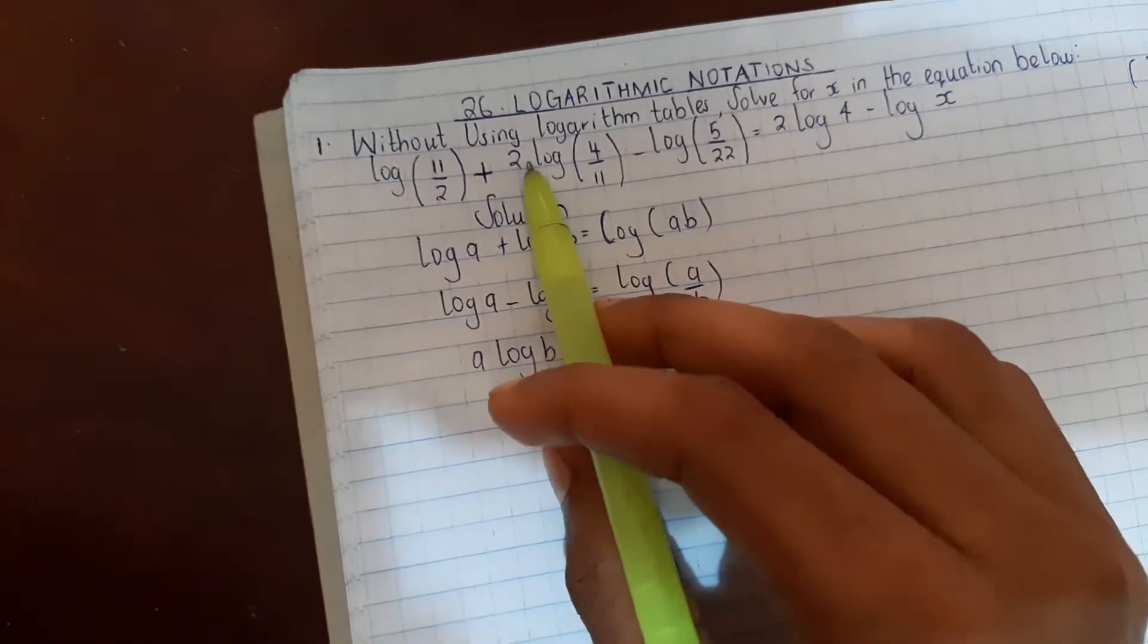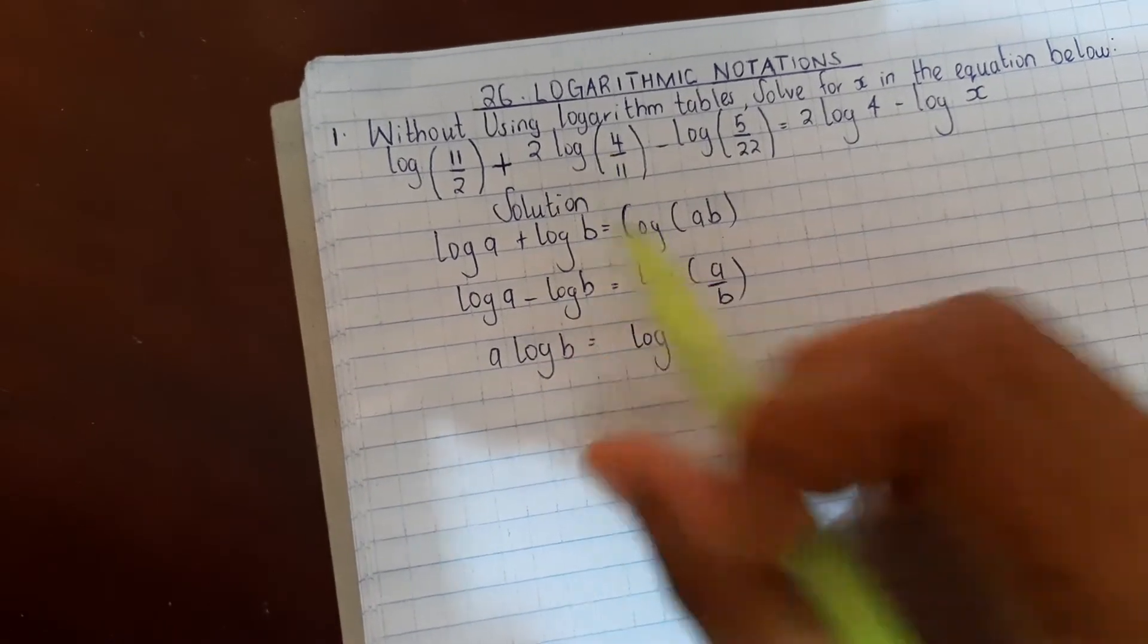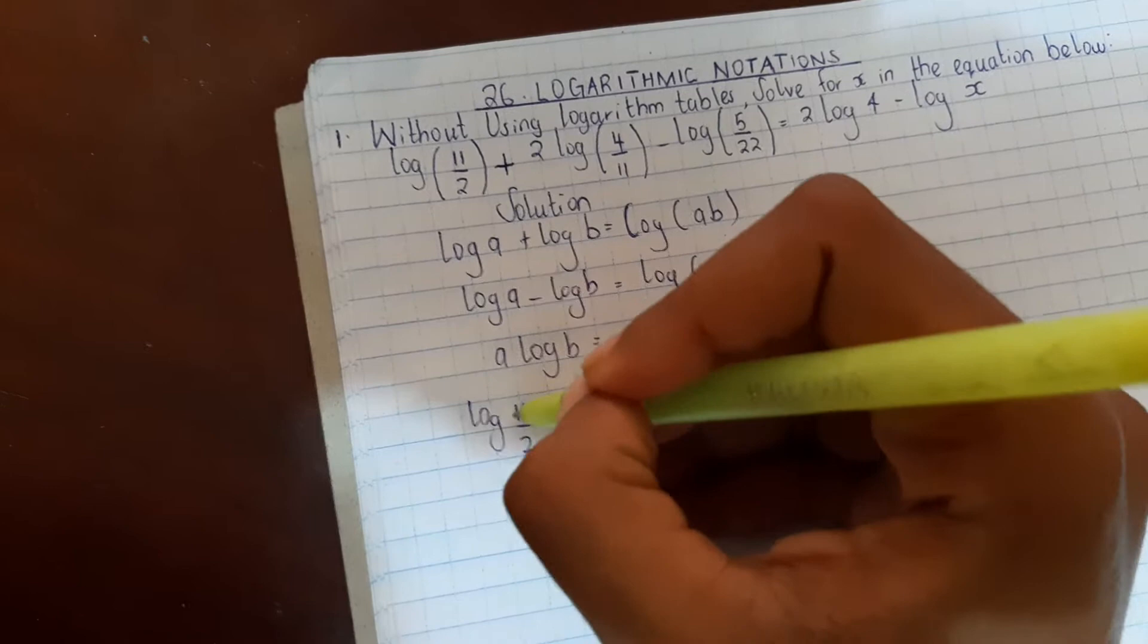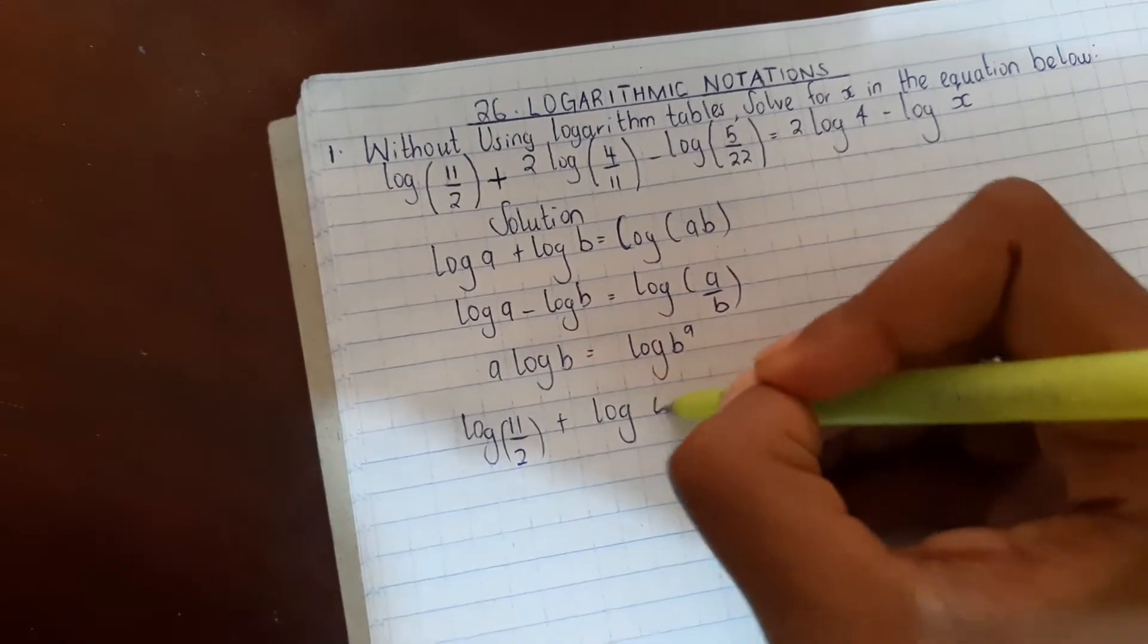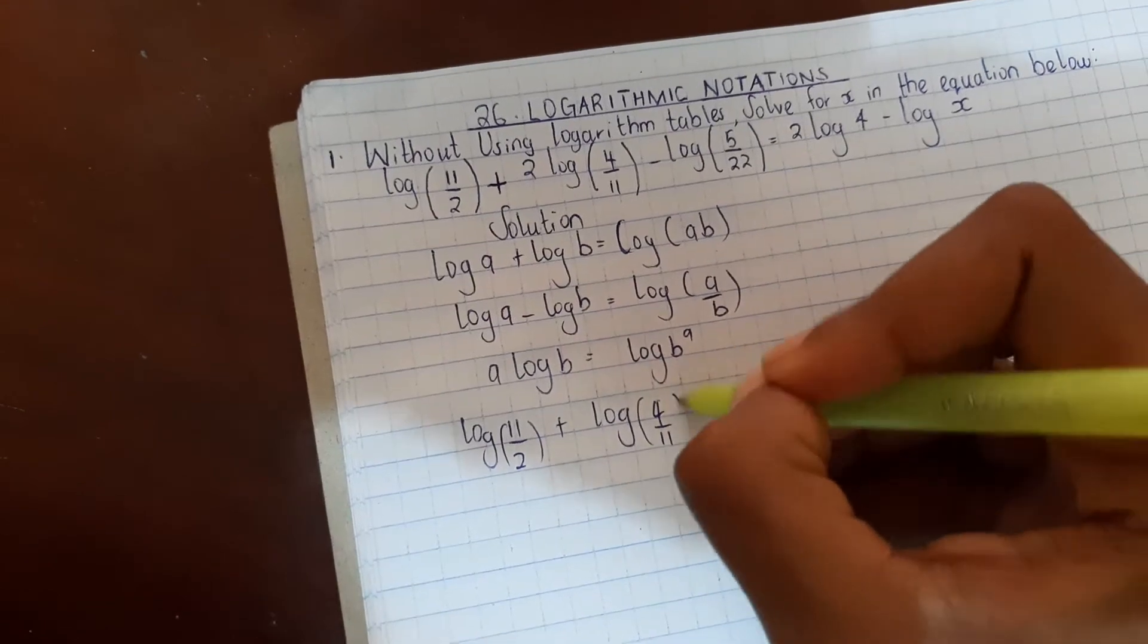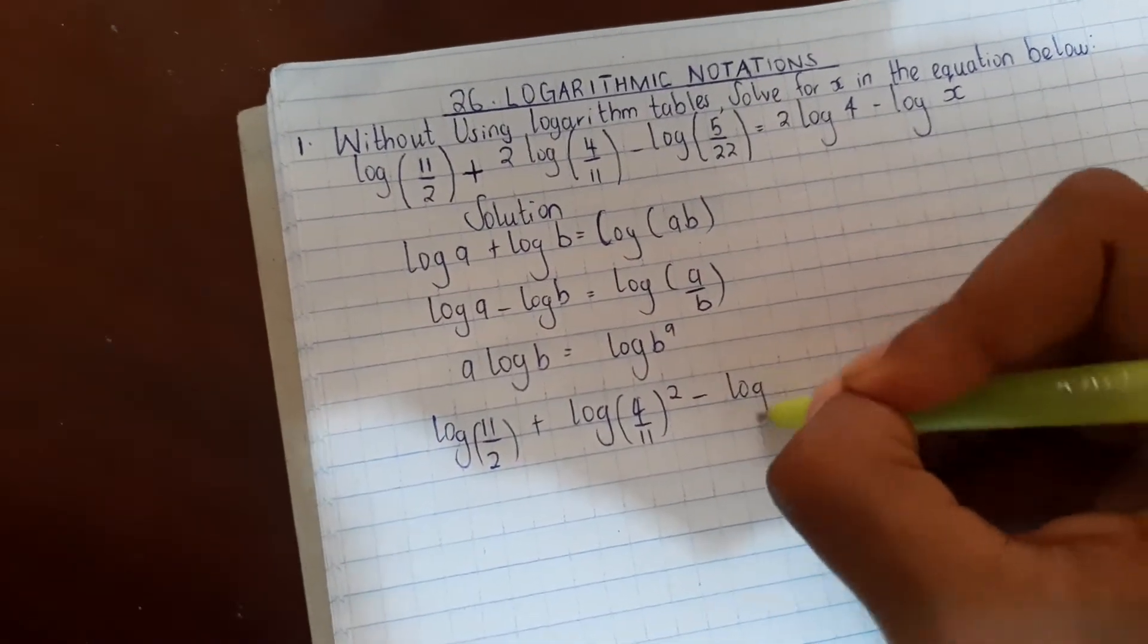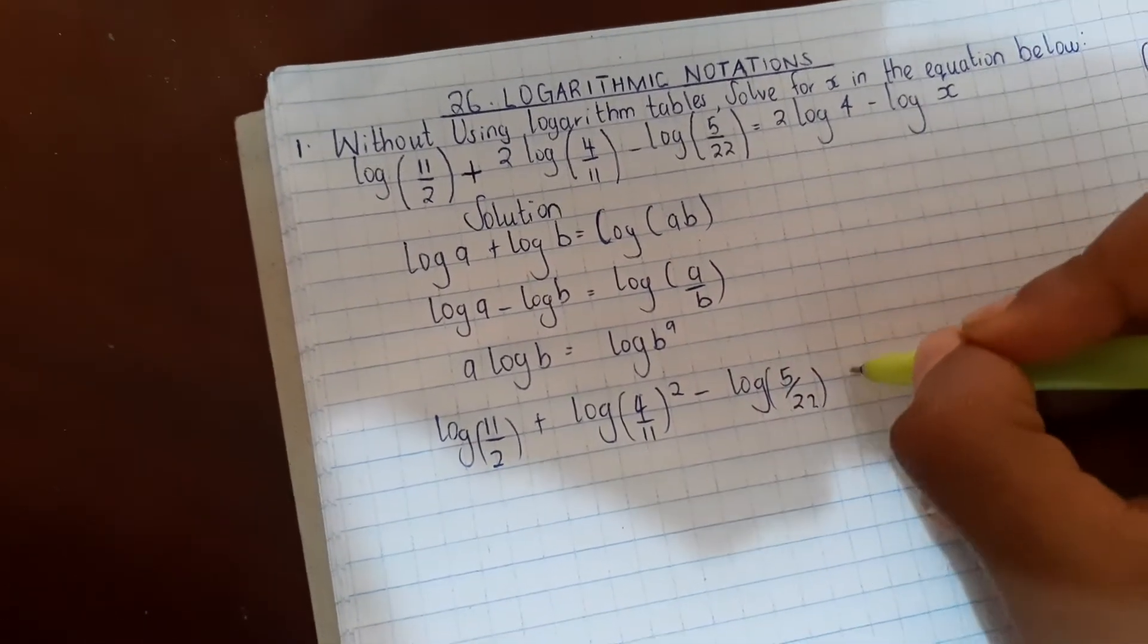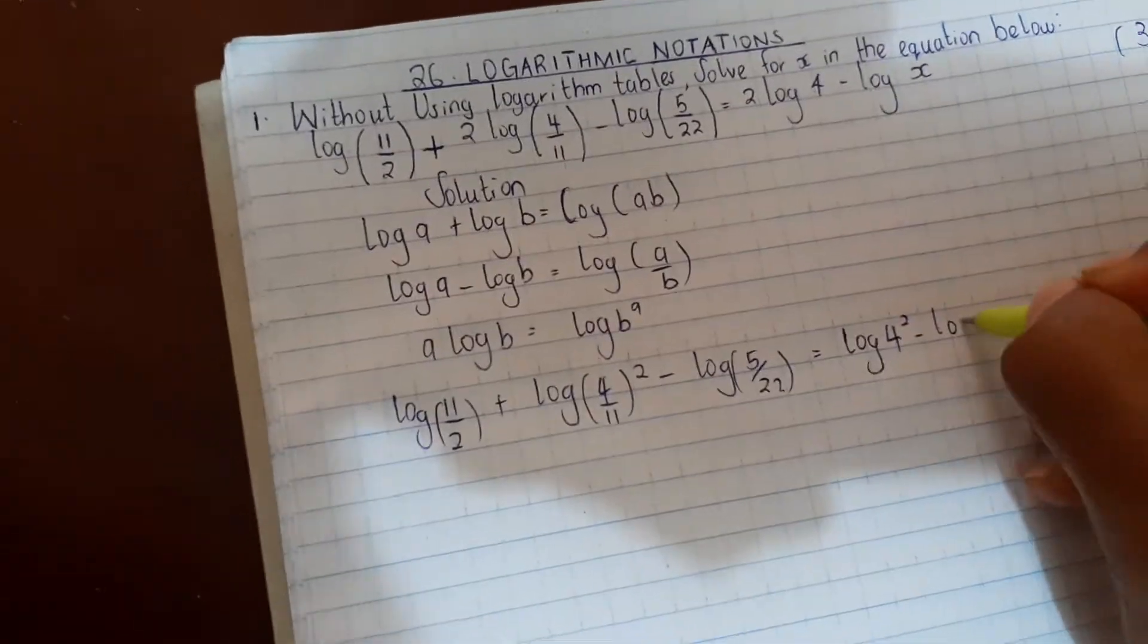So the first step, we will square this. So we have log 11/2 plus log 4/11, this will be squared, minus log 5/22 equals log 4 squared minus log x.